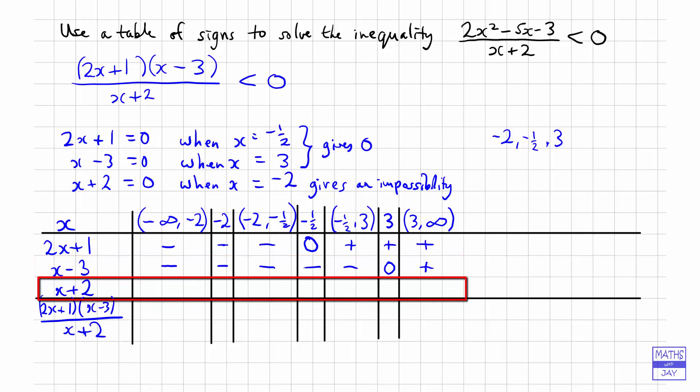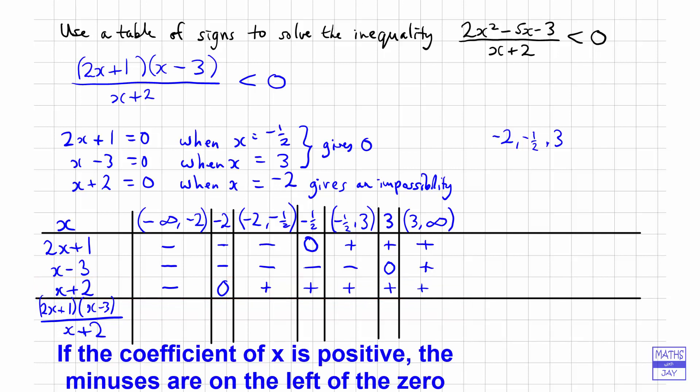And then for x plus 2, the 0 goes in at minus 2, and minus to the left and plus to the right. Now this idea of minus to the left and plus to the right always works so long as the x value that you've got has not got a negative in front of it. If it has got a negative in front, then it would be the opposite way around. We'd have pluses to the left and minuses to the right.